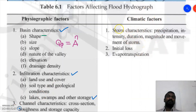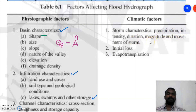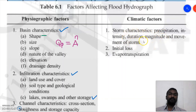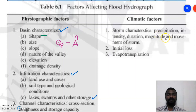Now we discuss climatic factors. The most important part of climatic factors is storm characteristics. The key sub-parameters are intensity, duration, magnitude, and direction of movement of the storm. Intensity is precipitation divided by time — how intensely rainfall occurs — and all these sub-parameters affect the shape of the hydrograph.